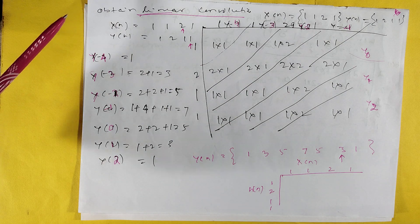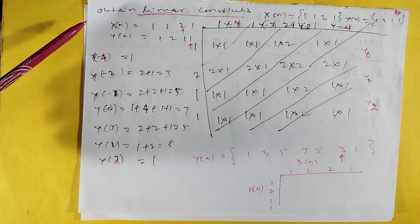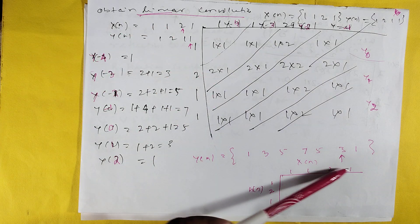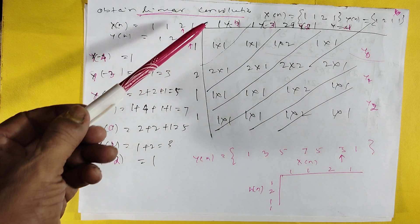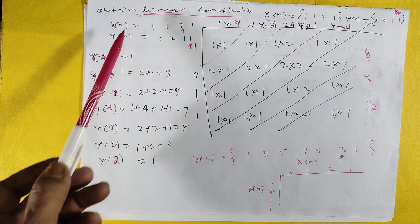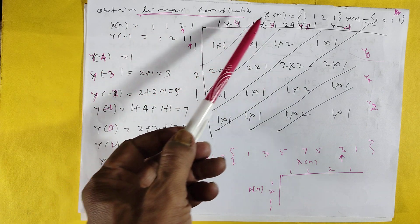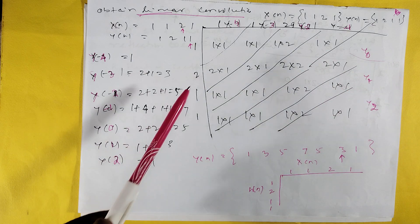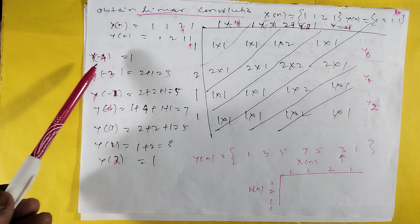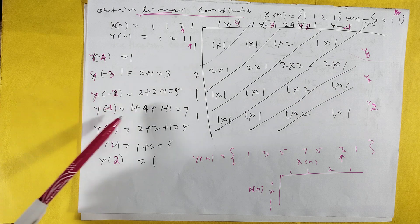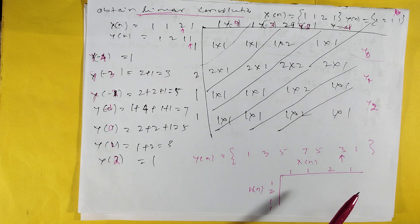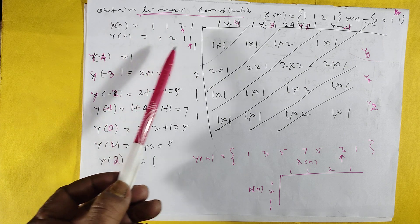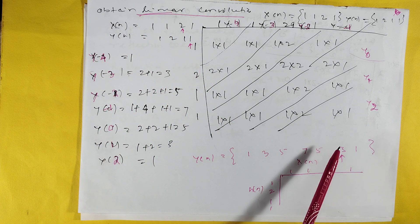Obtain the linear convolution. Here x[n] is arranged this way, h[n] is arranged. X has 4 numbers: 1, 2, 3, 4. Y indices are y[-4], y[-3], y[-2], y[-1], y[0], y[1], y[2], y[3]. If you multiply, y[-4], y[-3] come like this. Arrow is after 5 positions: 1, 2, 3, 4, 5.